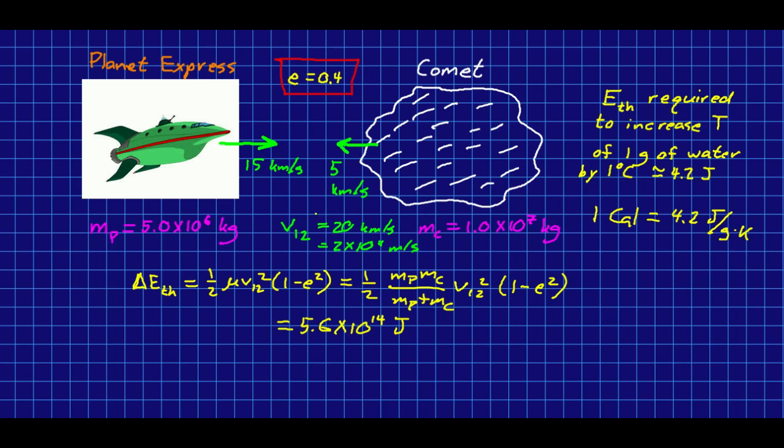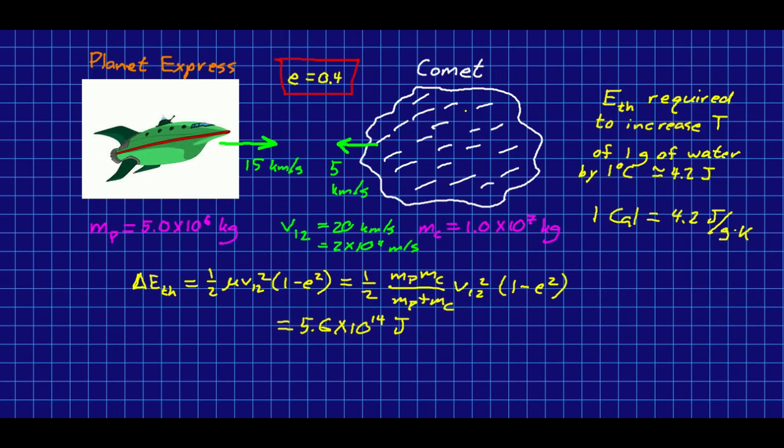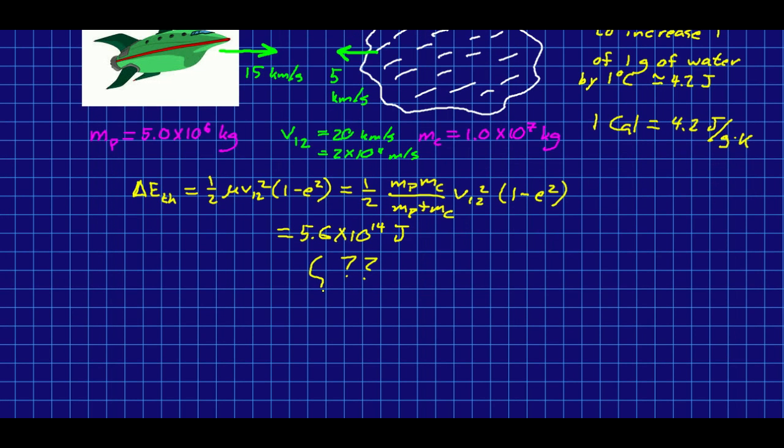Yeah, orbital speed collisions are pretty energetic, eh? Well, how much of that ends up in the comet? I have no idea. Let's say half, right? Why not? So we get 2.8 times 10 to the 14 joules of thermal energy in the comet out of this collision.